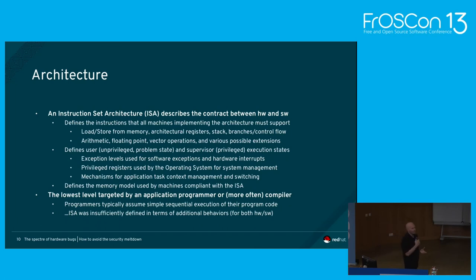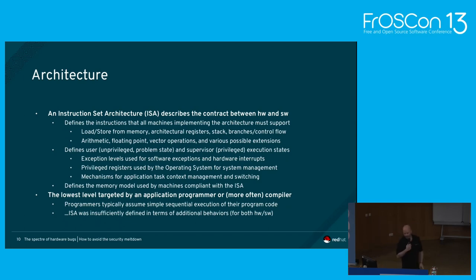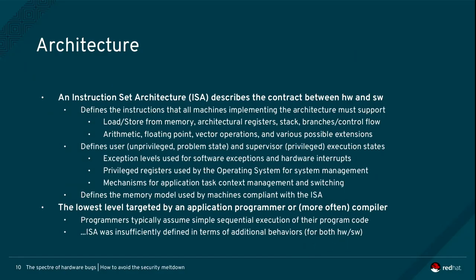When you build your applications, you are targeting the ISA — the instruction set architecture. You compile software that matches the ISA, and the ISA describes certain behaviors of the machine: for example, the registers, stack, how you can call functions. It defines user and privileged or kernel modes of execution. It's the lowest level typically targeted by application programmers — usually through a compiler and assembler, or you're writing at a much higher level and never see any of this.